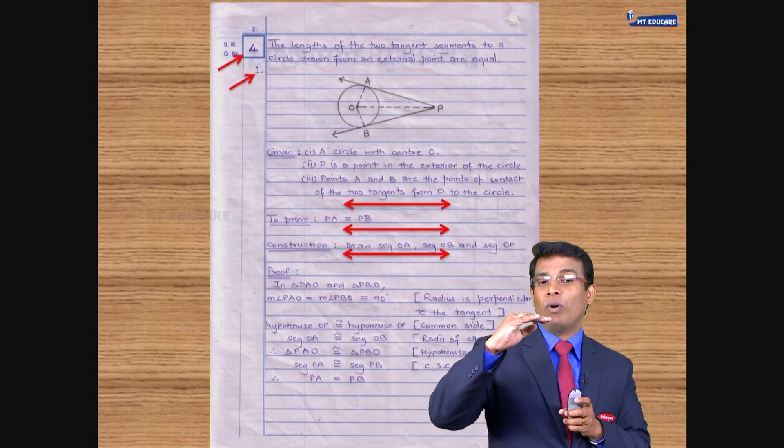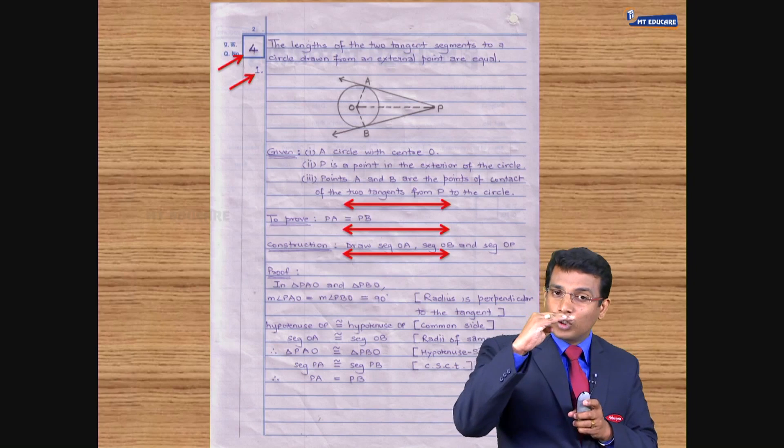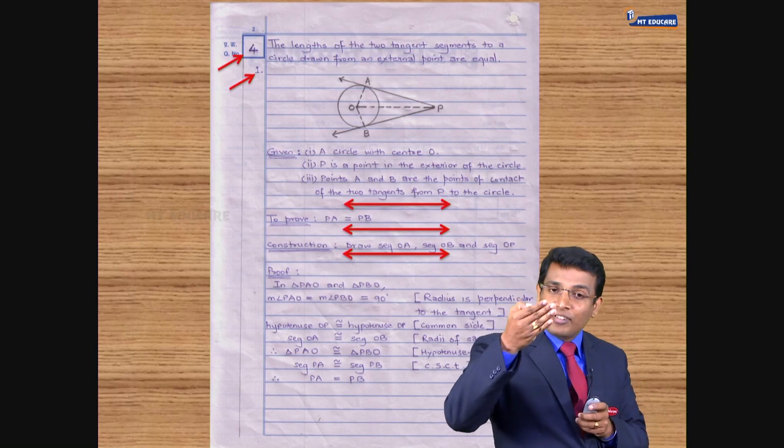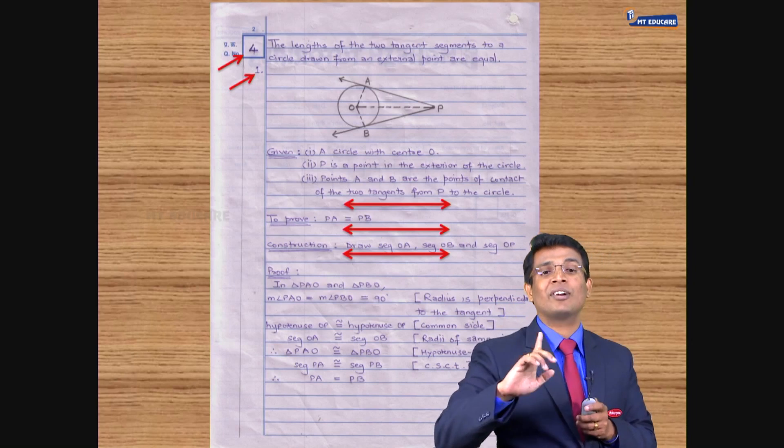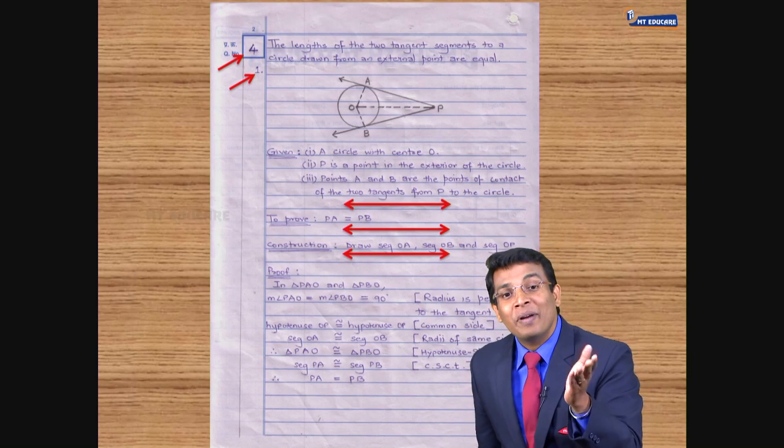After the given completed, leave one line, come into the to proof. After the to proof, leave one line. Construction if any, and after construction, leave a line and then start with the proof. That's the way you present it. The presentation looks better.